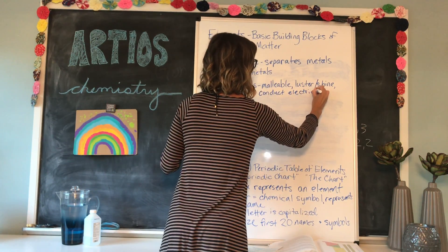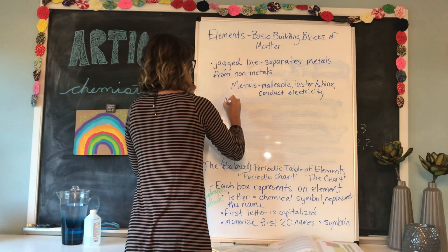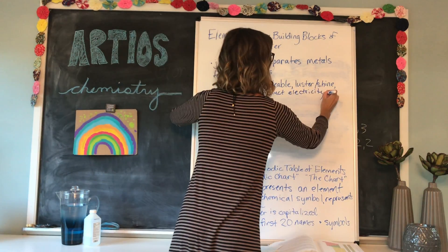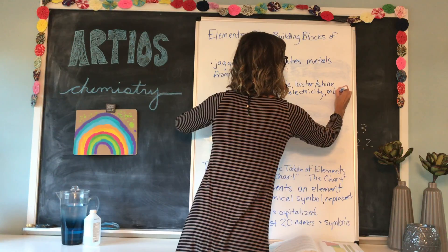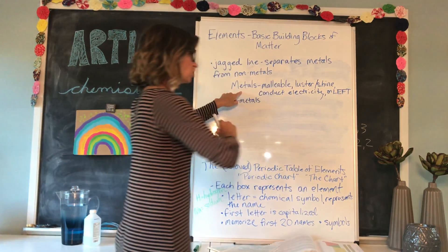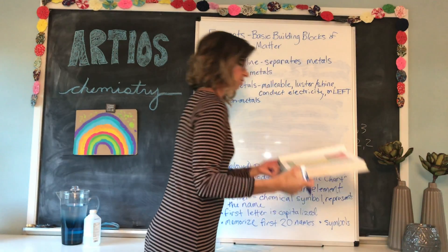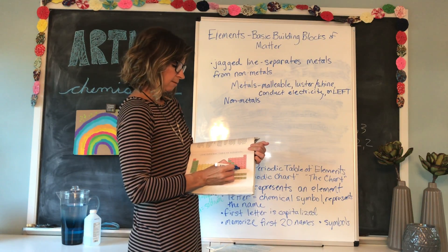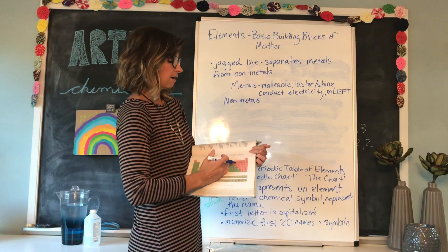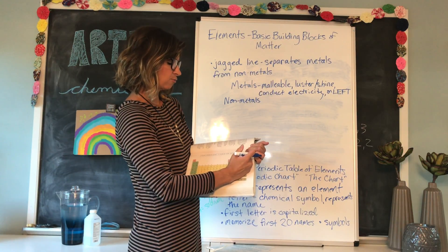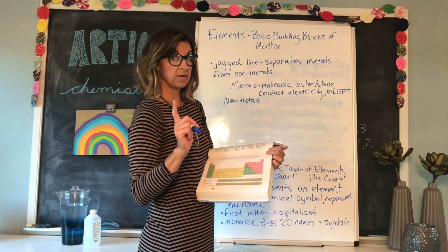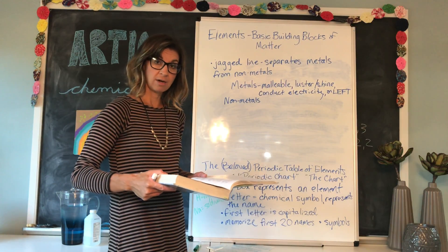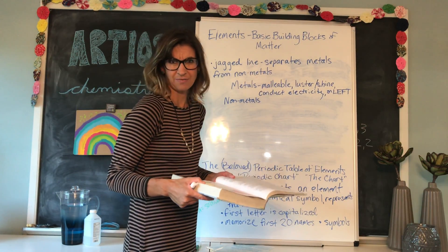So metals are malleable, have luster, and conduct electricity. The metals are on the left of this jagged line on the periodic table — you'll see it on page 75 of your book as a dark bolded black line. Everything to the left is metals; the elements to the right are the non-metals. There is one exception: hydrogen, which you'll see in the top left corner. We'll learn why it's there later, but hydrogen is not a metal — there's always some sort of exceptions, right?